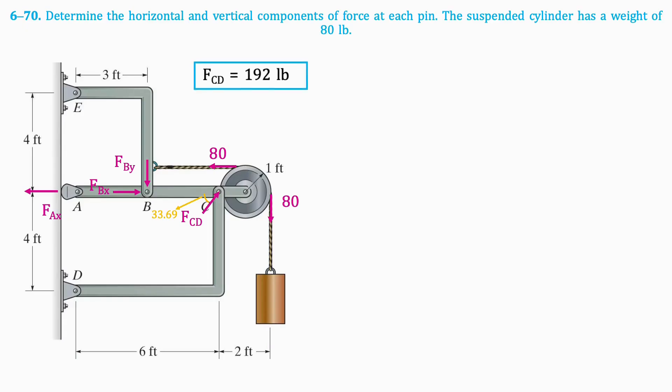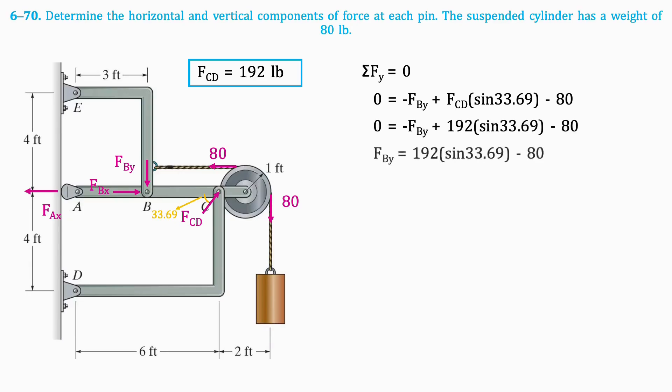Next, we'll take the sum of vertical forces in order to find F_BY. This includes the sine component of the force CD. Remember that this force is now pointing upwards, so it will be positive. Isolating for F_BY, we get that it equals 26.5 pounds.